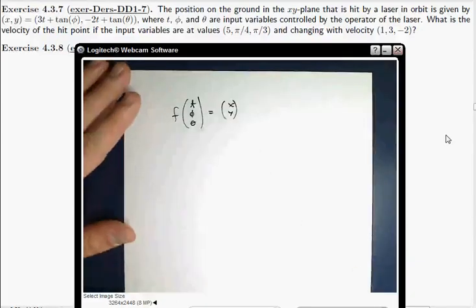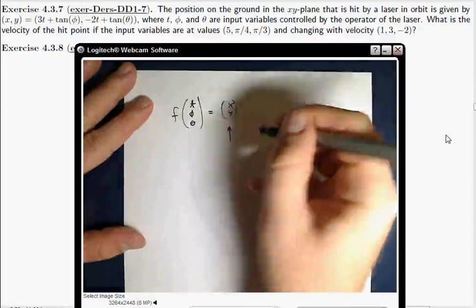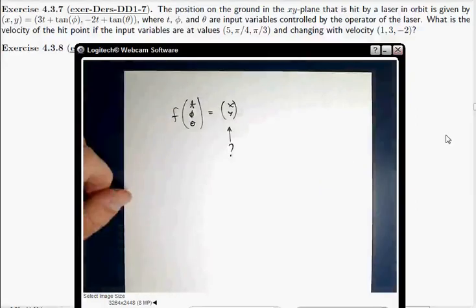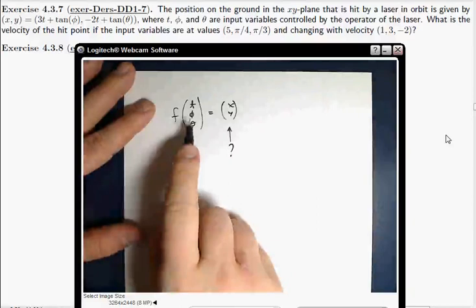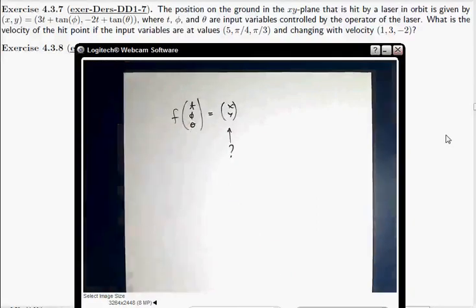And we've got a formula for this function. It's the formula given there. And I want to know how fast is this changing, right, if we start off with certain values of these parameters and change these parameters with a certain velocity. In other words, we're trying to compute exactly a directional derivative.